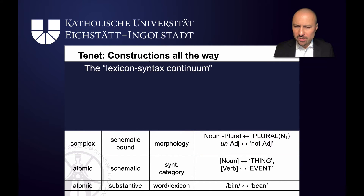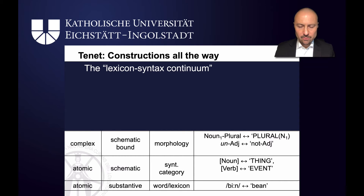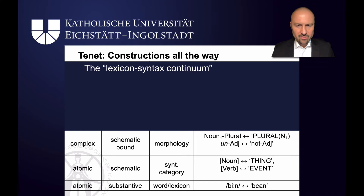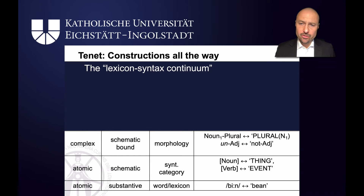Then we've got complex constructions — constructions where we can identify parts. In the noun plural construction — cats, dogs, horses — we can see there's a noun that we find elsewhere in the constructicon with an added part that signals the plural. The noun on the form level corresponds to a 'thing' slot on the meaning level, and the -s at the end is a plural marker. Our well-known unadjective construction — not adjective, untrue, unfriendly, unhappy — is also complex because we've got two parts: the initial 'un-' and then a slot, and the slot makes it schematic. These are examples of how morphology is treated by constructions.